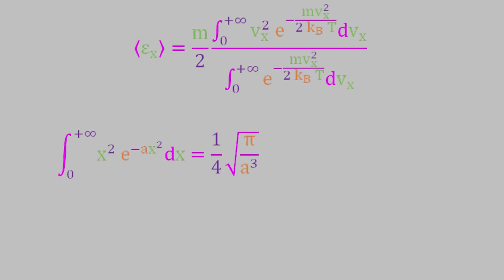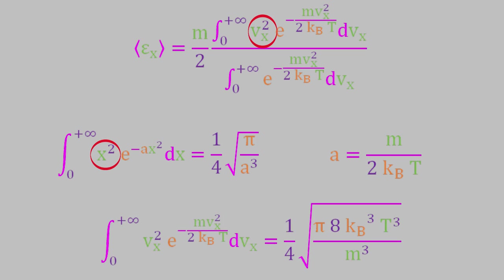If we compare this to the integral in the numerator of our equation, we can see that the x in the general equation corresponds to vx in our equation. And a in the general equation is m over kb times t in our equation. That means that the numerator can be written like this. One fourth times the square root of pi times 8 times kb cubed times t cubed over m cubed.